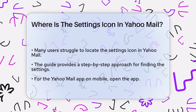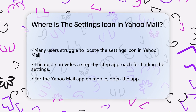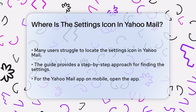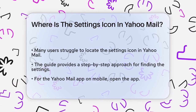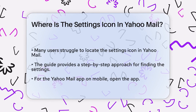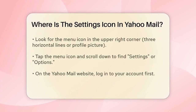First, let's talk about the Yahoo Mail app on your mobile device. To access the settings, you need to open the Yahoo Mail app and look for the menu icon in the upper right corner. It usually looks like three horizontal lines or a profile picture. Tap on this icon and then scroll down until you see the settings option. In some versions, it might say 'options' instead, but it serves the same purpose.